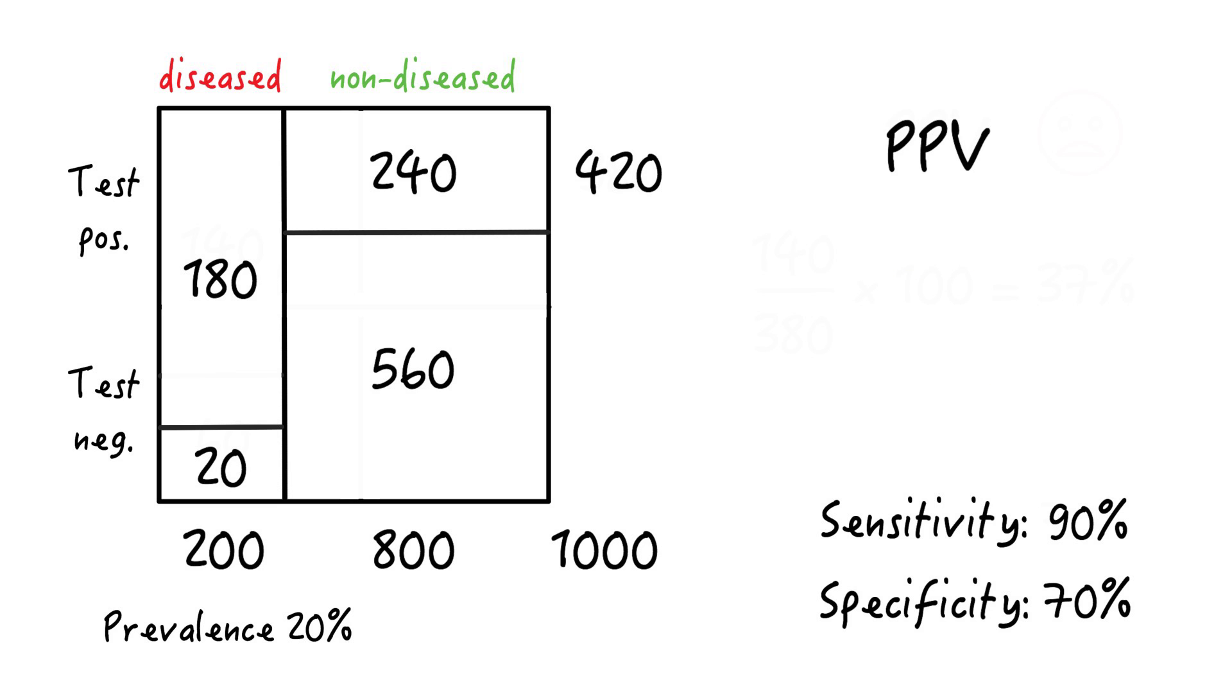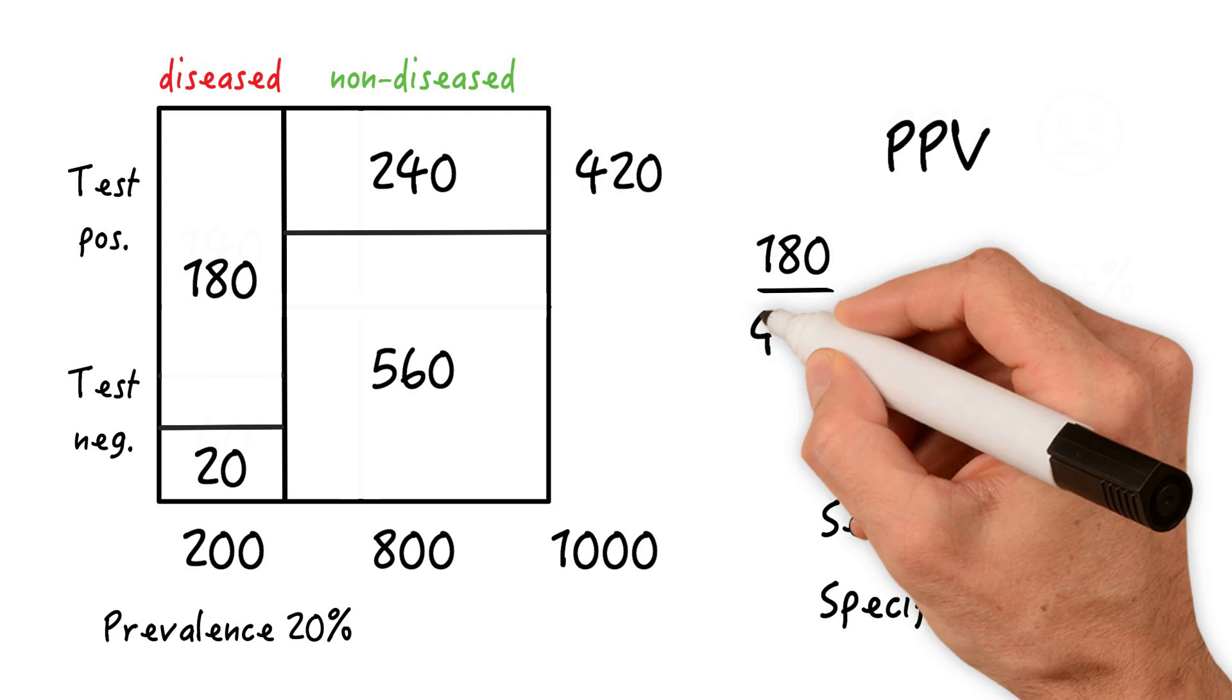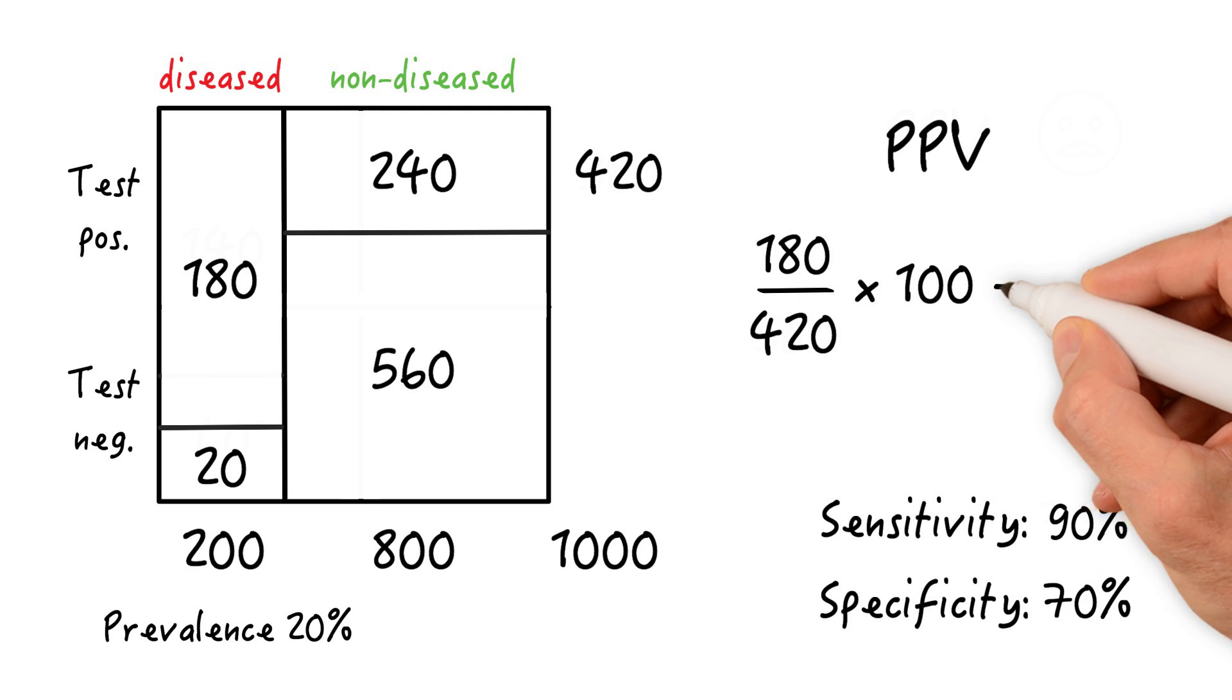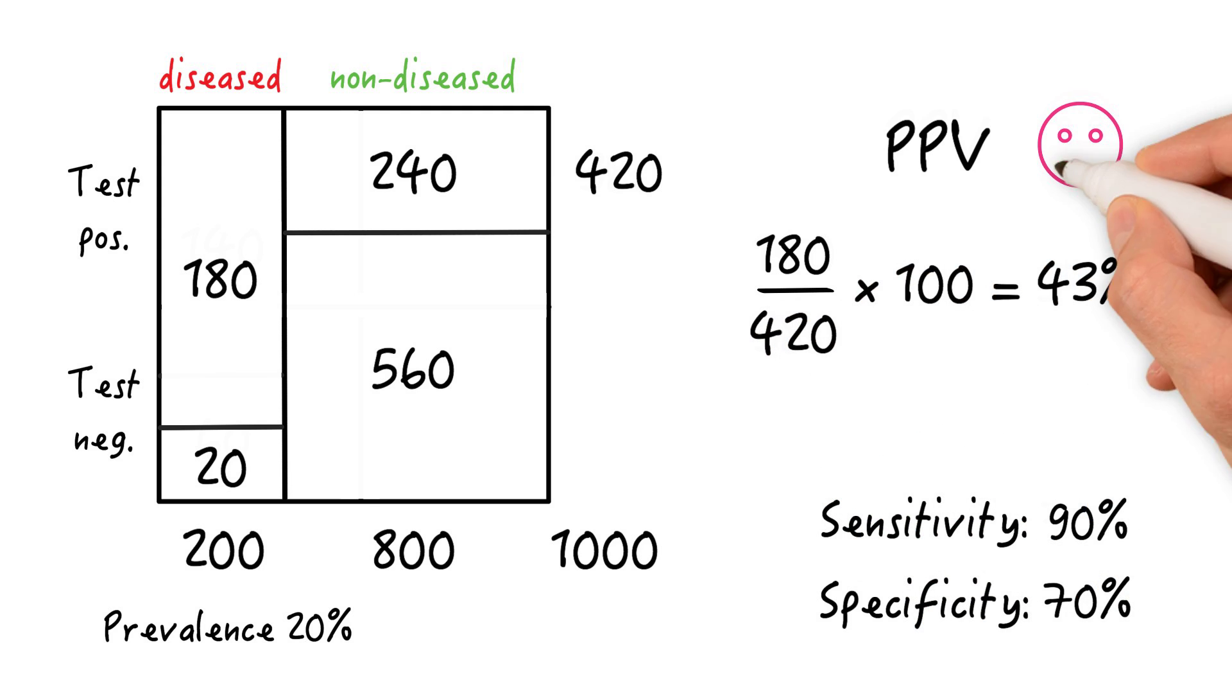So the PPV is calculated as 180 divided by 420 times 100, which equals 43%, so not a big improvement from our initial 37%, right?